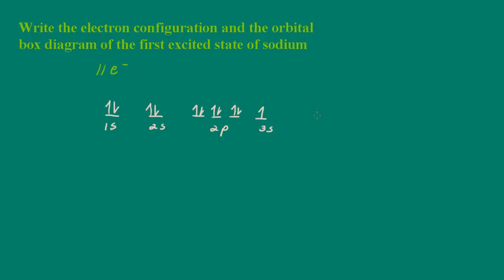So we can go ahead and write the electron configuration as 1s2, 2s2, 2p6, 3s1. So again, this is for sodium in the ground state.